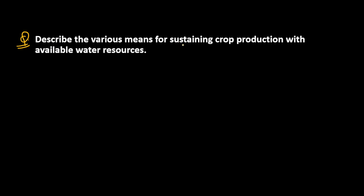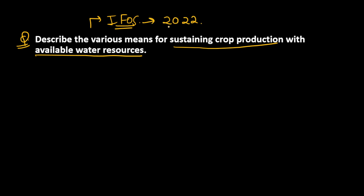Hello everyone, hope you all are doing well. Today we are going to do the next question of our agriculture optional answer writing practice series. Today's question is: describe the various means of sustaining crop production with available water resources. This question was asked in the agriculture optional paper of UPSC Indian Forest Service (IFO) examination of 2022.